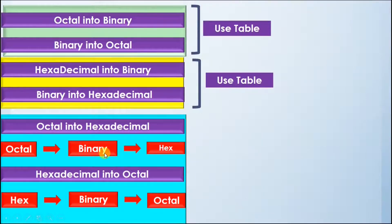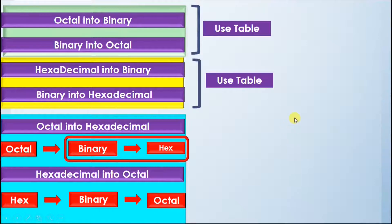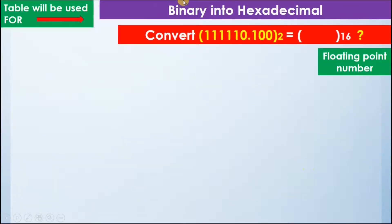Now we will see how to convert binary into hexadecimal to complete the full octal-to-hexadecimal conversion. In this example we are dealing with a floating point number: 1 1 1 1 1 1 0 dot 1 0 0 in binary, and we have to convert it into hexadecimal.